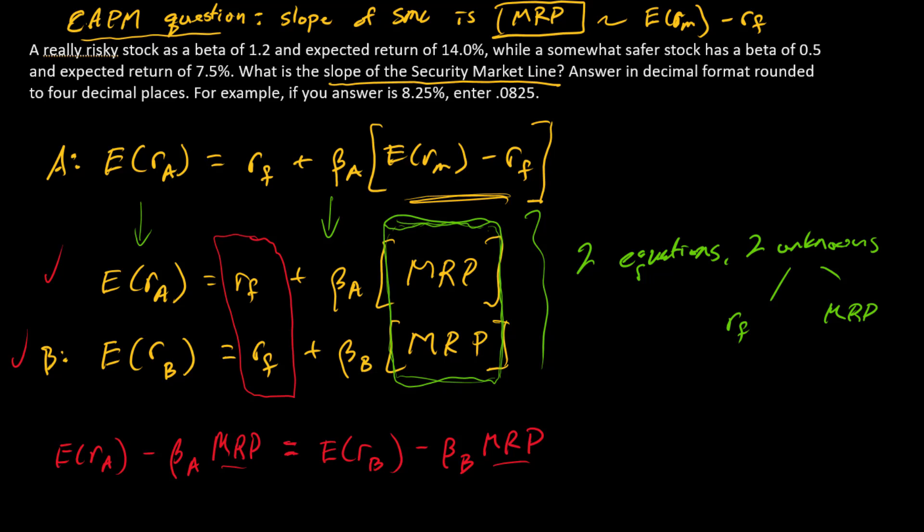So how do I do that? Over here to the side, instead of going and working down, you can see algebraically that the expected return of A minus the expected return of B divided by beta A minus beta B is equal to the market risk premium.